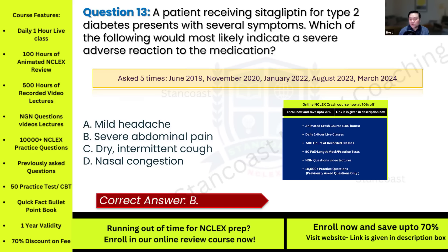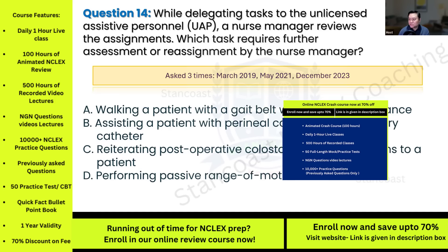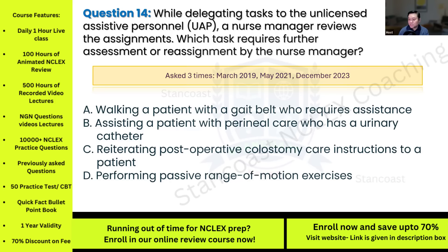Question fourteen: While delegating tasks to the unlicensed assistive personnel (UAP), a nurse manager reviews the assignments. Which task requires further assessment or reassignment by the nurse manager? This has been asked three times. Options: A) walking a patient with a gait belt who requires assistance; B) assisting a patient with perineal care who has a urinary catheter; C) reiterating post-operative colostomy care instructions to a patient; D) performing passive range of motion exercises.